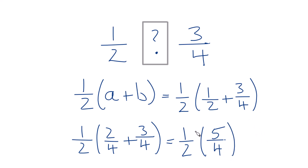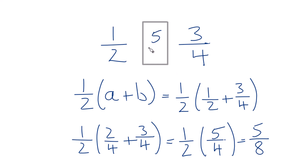When we multiply fractions, we multiply the numerators — one times five is five — and then we multiply the denominators — two times four is eight. So the number between one-half and three-fourths is five-eighths, and this is how we figured it out.